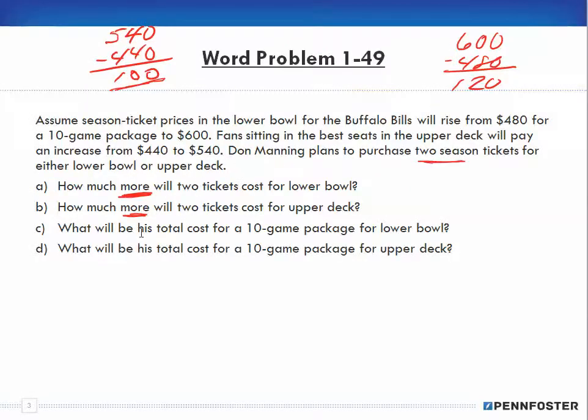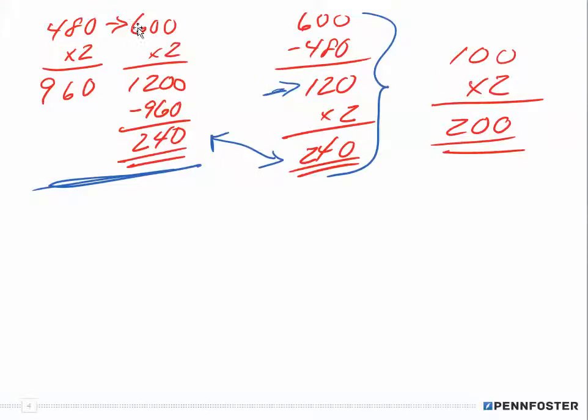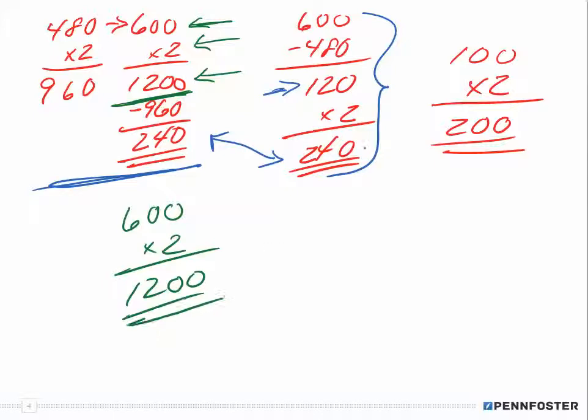Part C: what will be his total cost for 10 game package for the lower bowl? Now it's asking what will be his total cost for the 10-game package. If the price increased to $600, we had already done this in the previous one. The price was $600 and I'm multiplying it by 2, my answer would be $1200. So that's what I would have arrived at for the total cost.